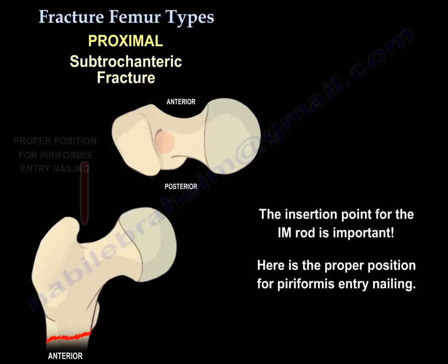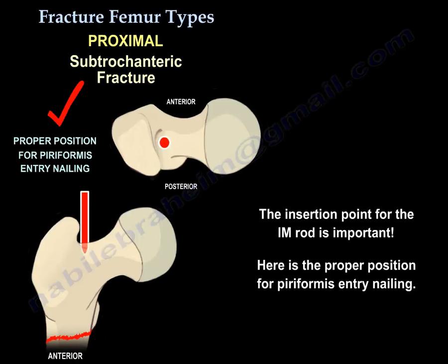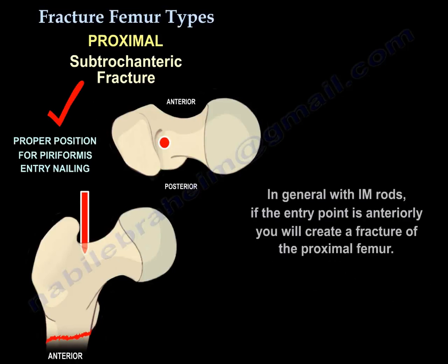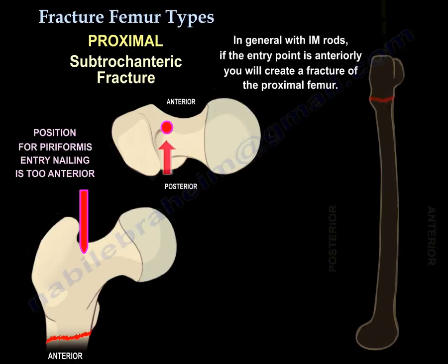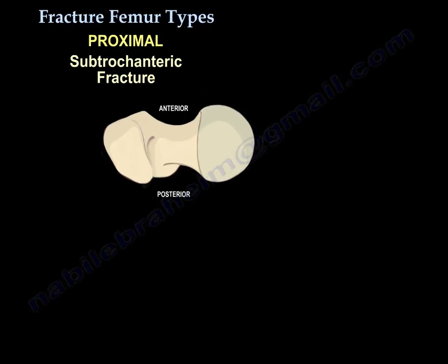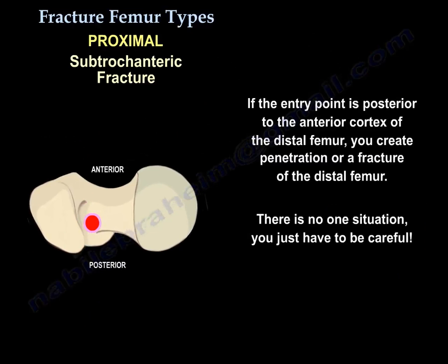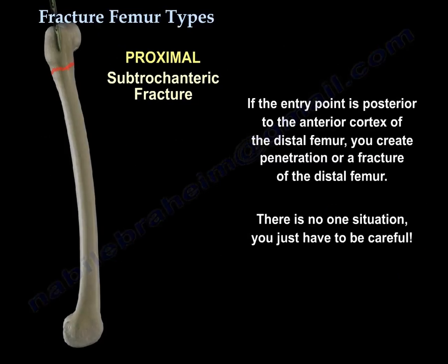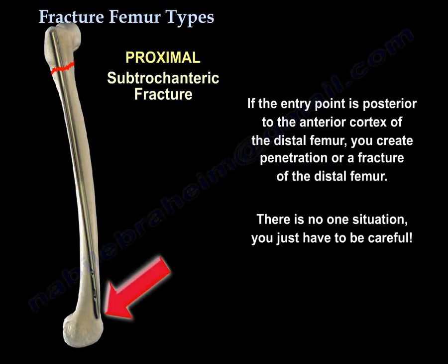The insertion point for the intramedullary rod is important. Here is the proper position for piriformis entry nailing. In general, with intramedullary rods, if the entry point is anterior you create a fracture of the proximal femur, and if the entry point is posterior you create penetration or a fracture of the distal femur. There is no perfect situation — you just have to be careful.